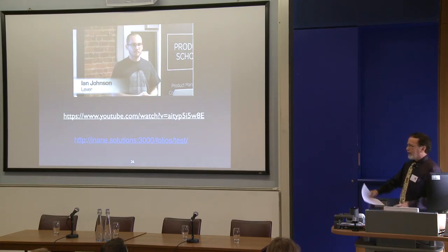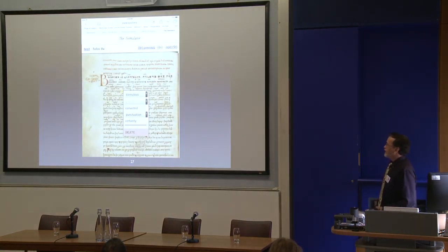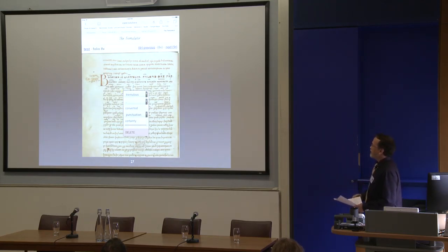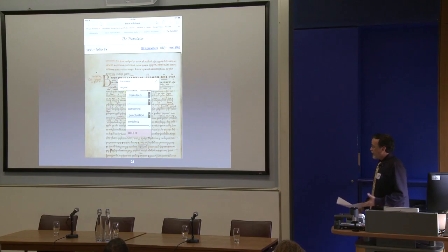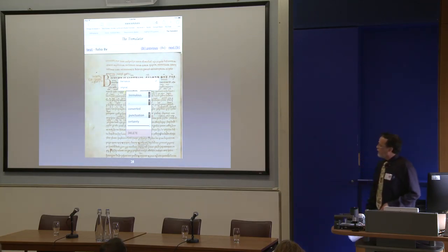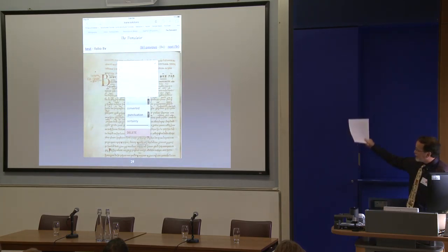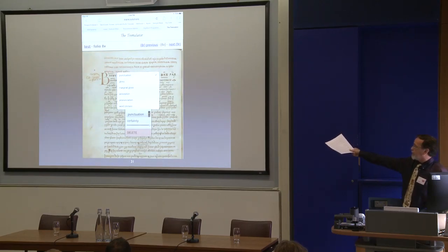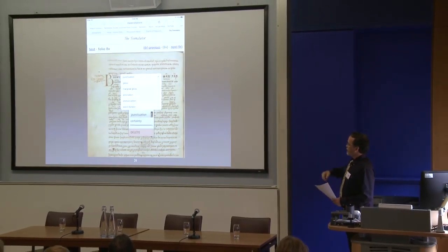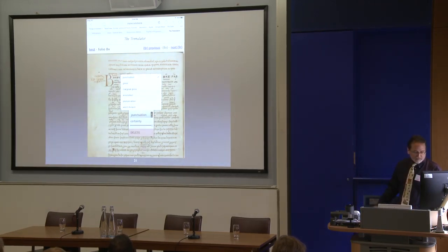Rather than try to hook up the Tremulator and deal with Wi-Fi problems, I just took some screenshots to show you what it looks like. This is the view you would see on your iPad or other tablet or computer. When I touch the screen, a little yellow box appears around the place I want to highlight and a drop-down menu appears. My main project has to do with punctuation at the moment, so I have to choose whether I think it's Tremulous's or original, and then choose the actual punctuation mark from that pop-up menu. I can also indicate whether it's a converted piece of punctuation.